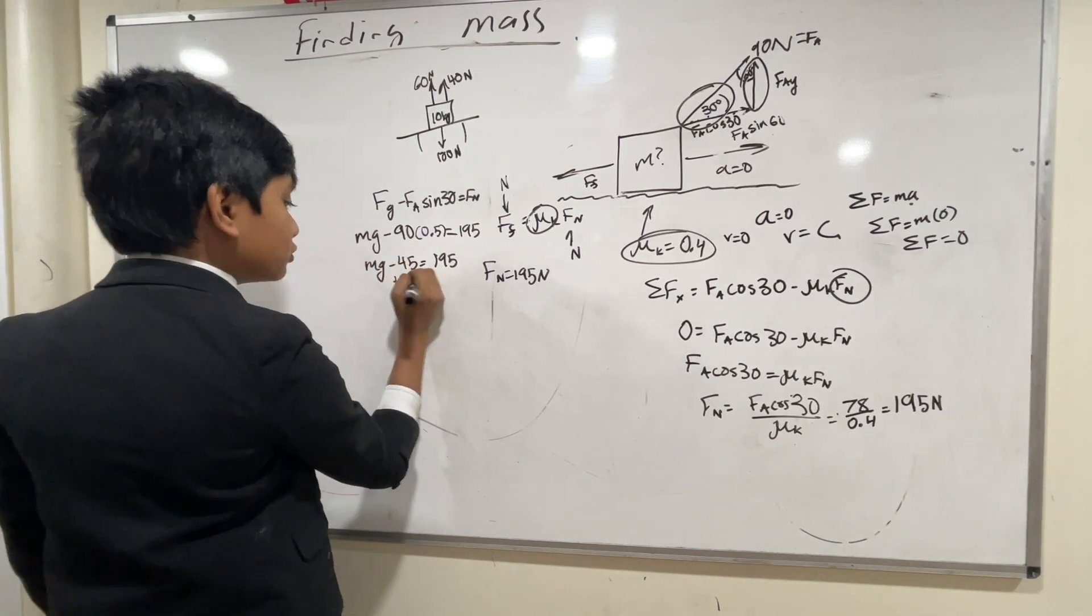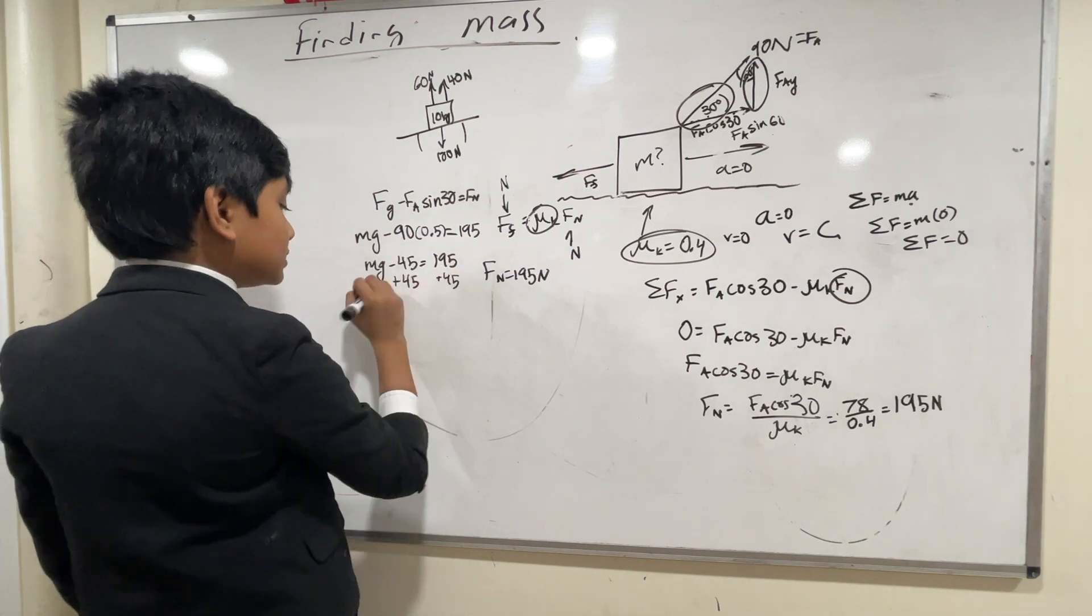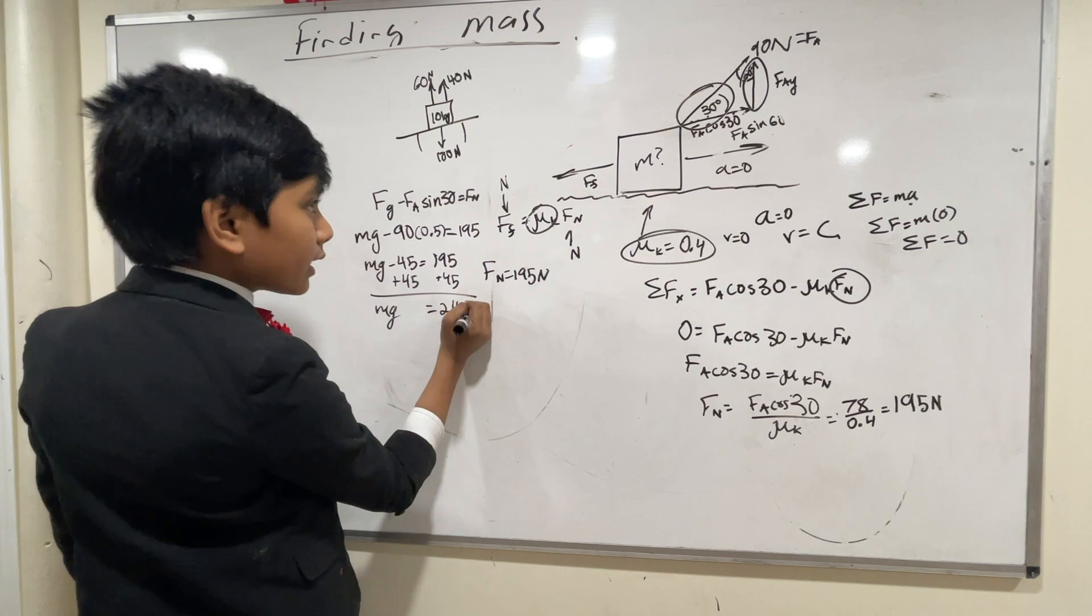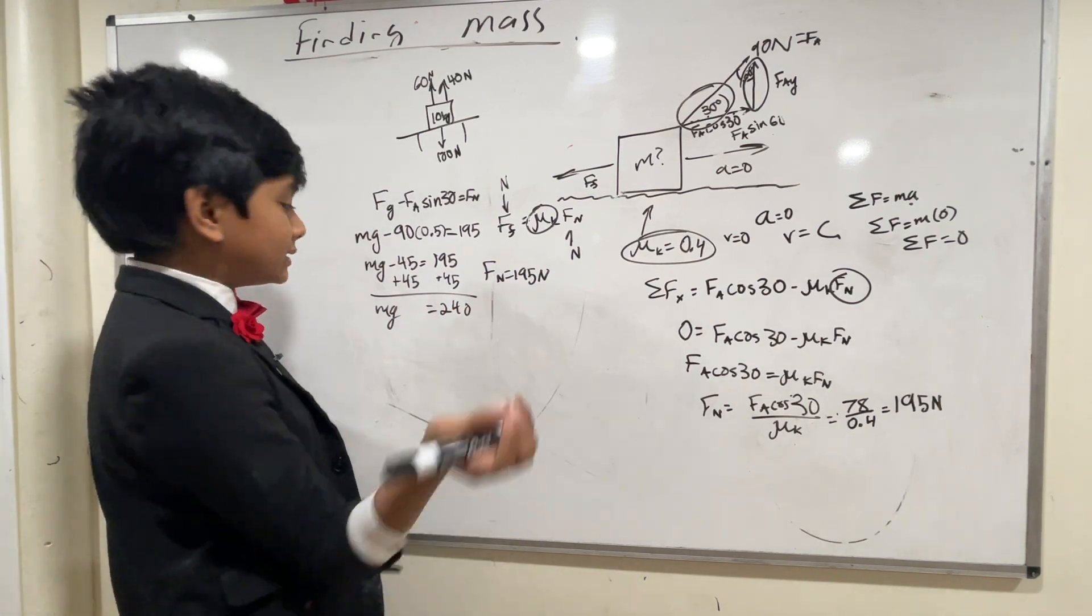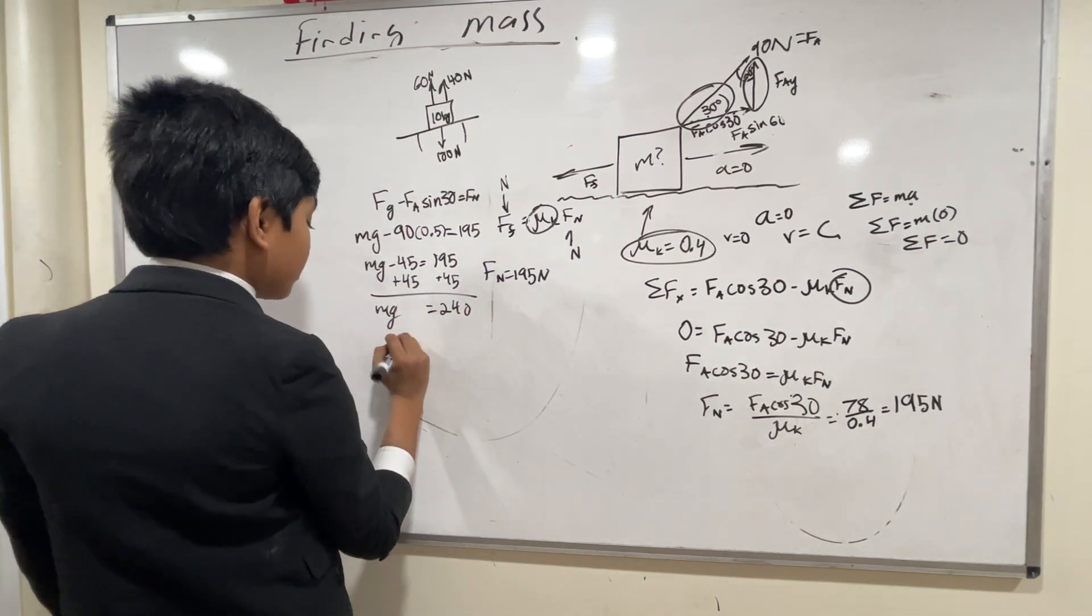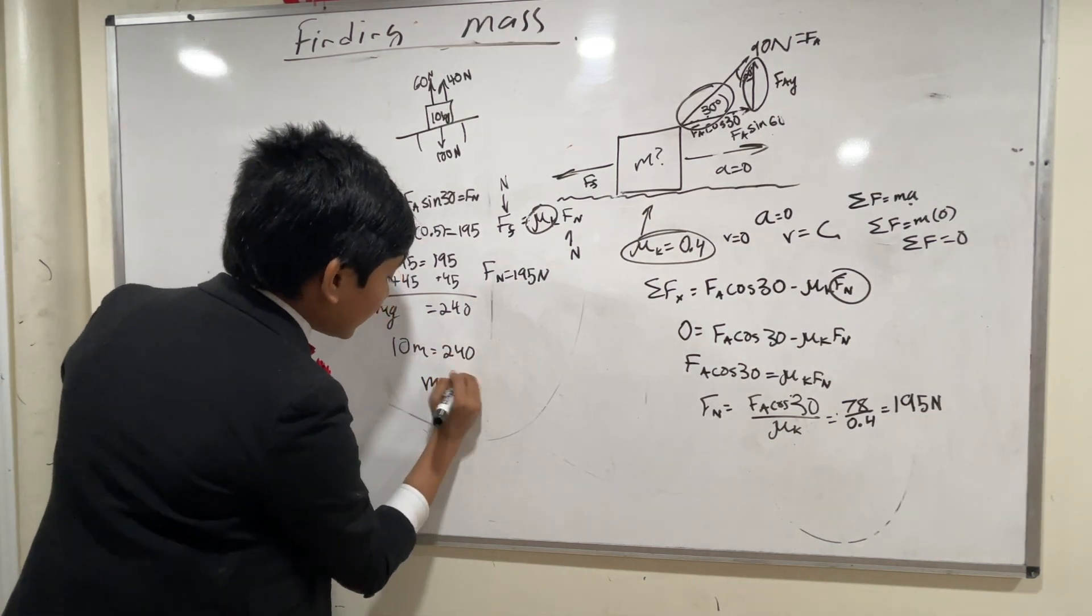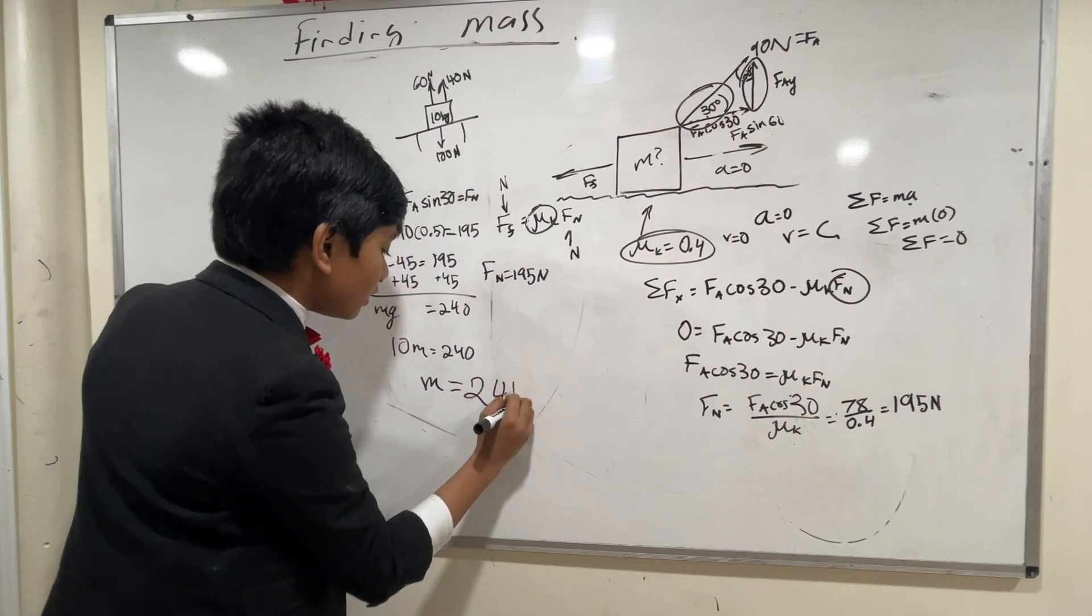And we add 45 to both sides. I'm just going to use simple algebra. And we get 240. By the way, here we're assuming g is 10. We're on some slightly different planet than Earth where g is a little bit bigger. So 10m is 240, and m is just 24 kilograms.